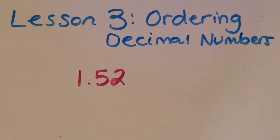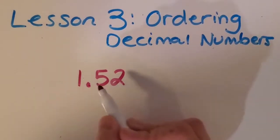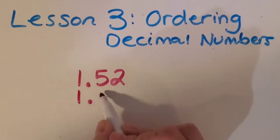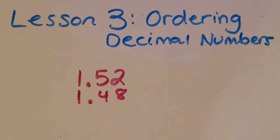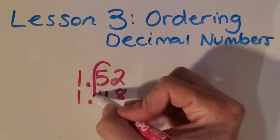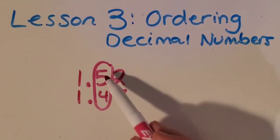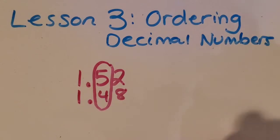So if we were wanting to compare 1 and 52 hundredths to 1 and 48 hundredths, we could use our place value skills to compare these. So we start here in the ones place, and we see that these are the same. So we move down to the tenths place and compare those. So then I ask myself, what is larger, 5 tenths or 4 tenths?